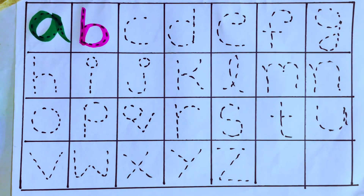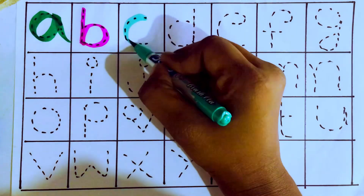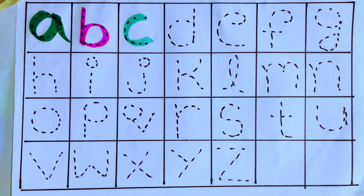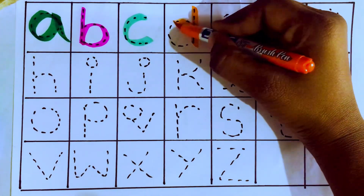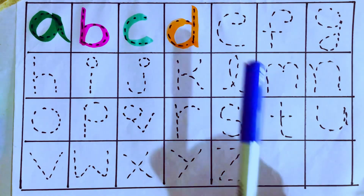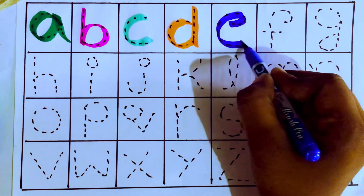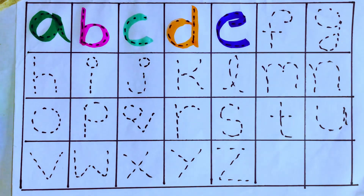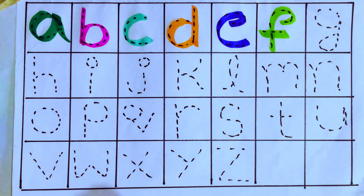Green color — B after C, which letter, kids? C! C for cat — C-A-T, cat. Orange color — C after D, which letter, kids? D! D for dog — D-O-G, dog. Blue color — D after E, which letter, kids? E! E for egg — E-G-G, egg. Green color — F for fish — F-I-S-H, fish.